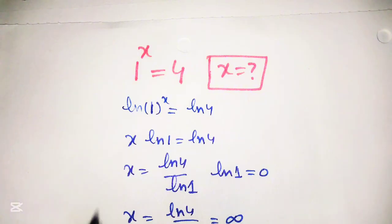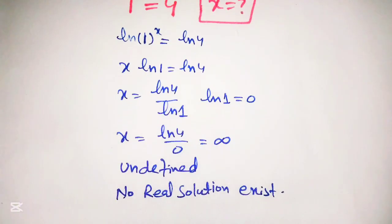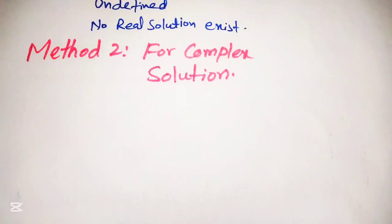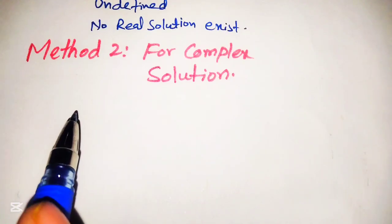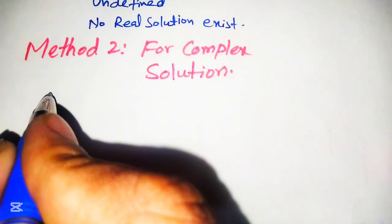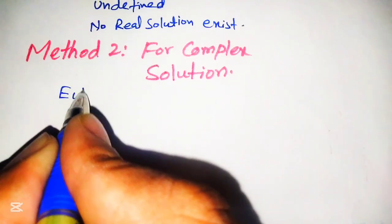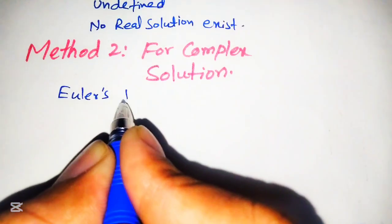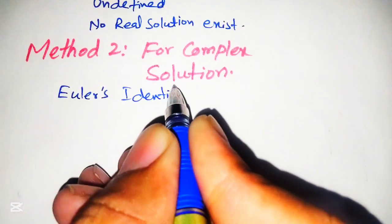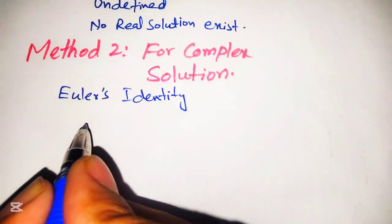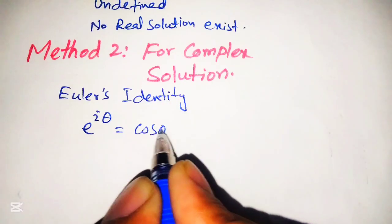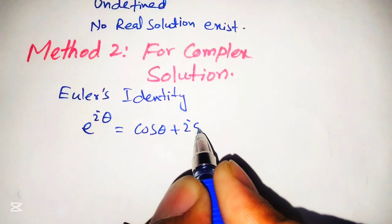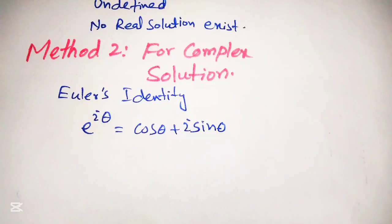For this purpose we will use a second method. To find the complex solution of this given equation, we will use Euler's identity.